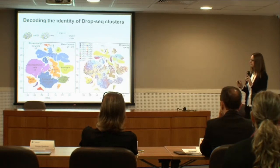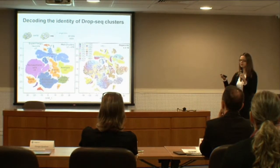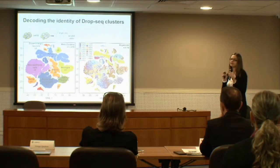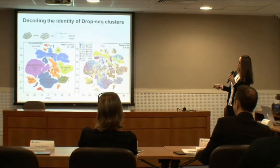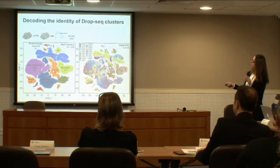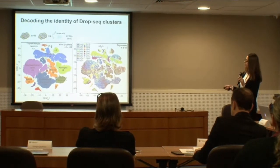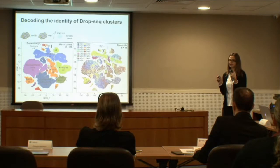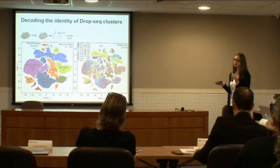Another real issue in the organoids field is understanding organoid-to-organoid heterogeneity, because no one really knows how similar these organoids are. They don't look very similar in the flask — their size is slightly different and they differ in pigmentation. We were really interested in understanding this heterogeneity. Plotting our 19 organoids labeled with different colors, we found that some clusters such as progenitors and retina are represented in each organoid, but for example the forebrain cluster is only present in about 30% of organoids.